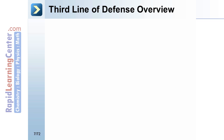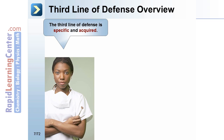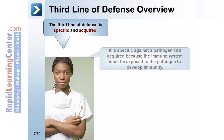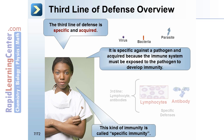Third line of defense overview. The third line of defense is specific and acquired. It is specific against a pathogen and acquired because the immune system must be exposed to the pathogen to develop immunity. This kind of immunity is called specific immunity.